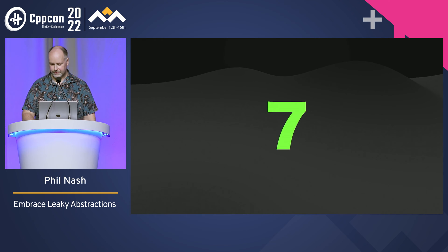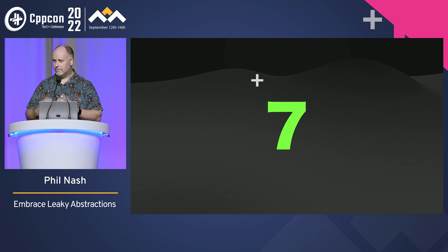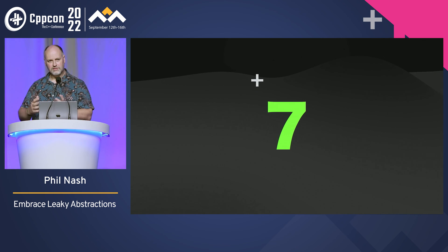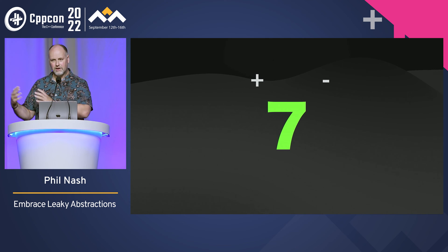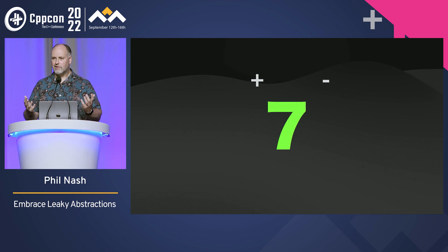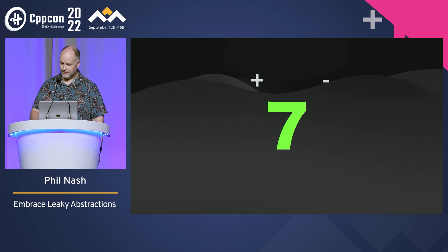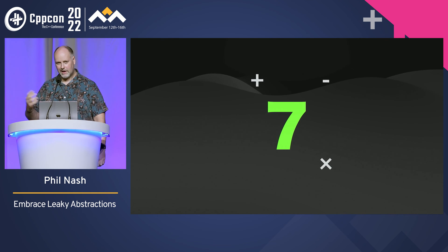We've added operations — for example, we added addition, and that's worked out pretty well. But if you can add numbers, you can subtract them as well, so we added subtraction. But then if you can subtract numbers, you'll eventually get back down to zero. But we didn't get zero until about the second century, which means for probably thousands of years this abstraction was leaking. But we carried on.